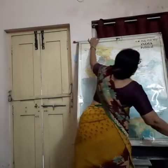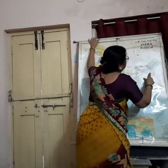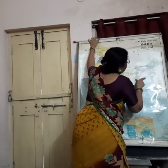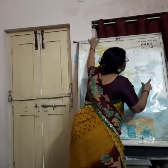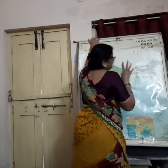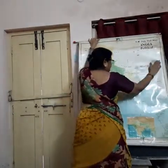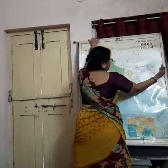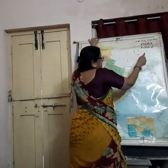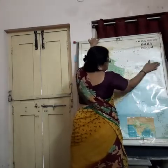The northeastern states are: Arunachal Pradesh, Assam, Nagaland, Meghalaya, Tripura, Mizoram, and Manipur. Seven states are there, children. This is the northeastern part of India. This is east and this is north. The direction which is between north and east is called the northeastern part.